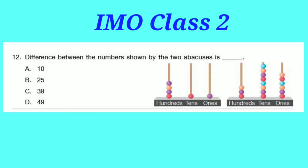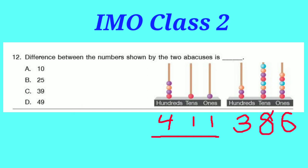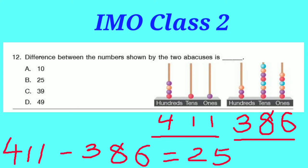Question number 12: The difference between the numbers shown by 2 abacuses is dash. In the first abacus, 4 is in the hundreds place, 1 in the tens place, and 1 in the ones place — so the number is 411. In the second abacus, 3 is in the hundreds place, 8 in the tens place, and 6 in the ones place — so the number is 386. Their difference: 411 minus 386 equals 25. Option B is correct.